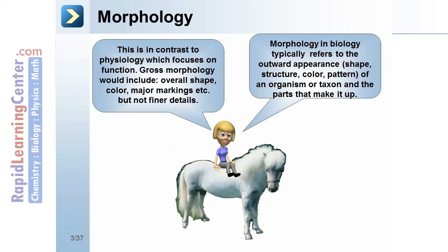Gross morphology would include overall shape, color, and major markings, but not the finer details.